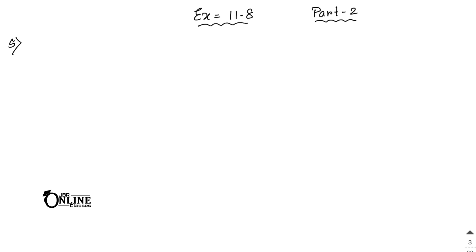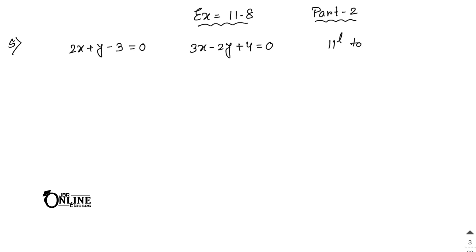Find the equation of the straight line through the point of intersection of the lines. The first one: 2x plus y minus 3 equal to 0, and the second one: 3x minus 2y plus 4 equal to 0, and also parallel to the line 4x plus y equal to 7.